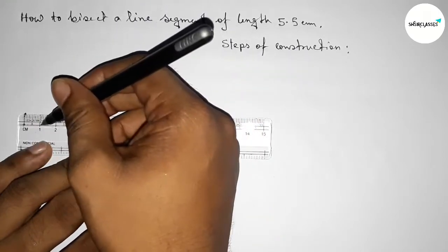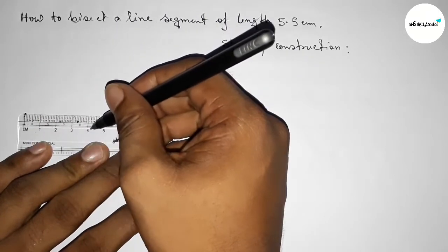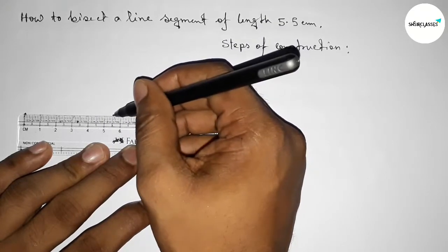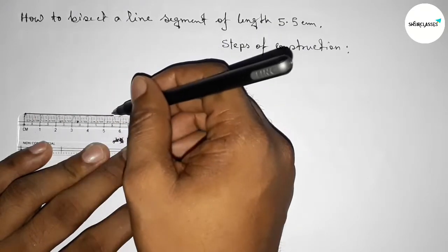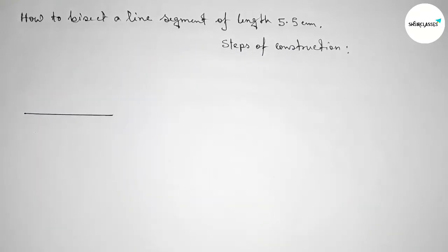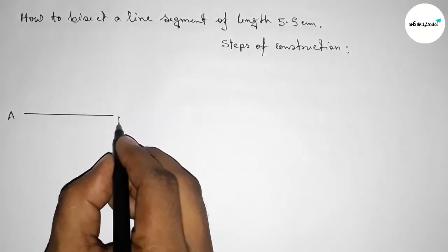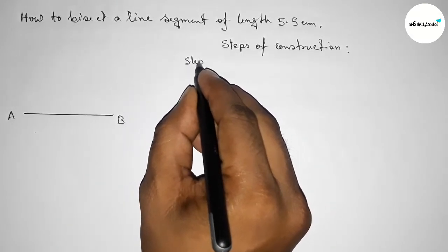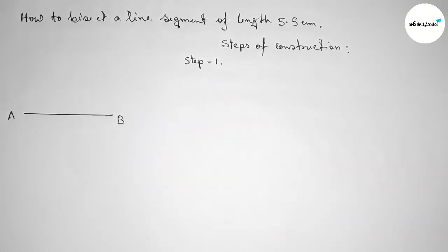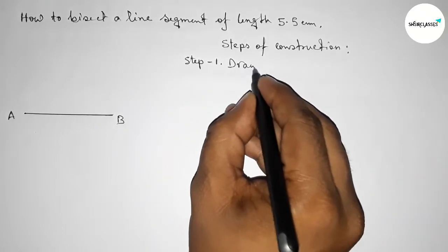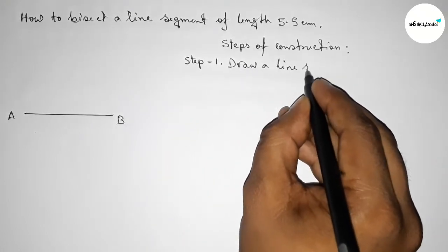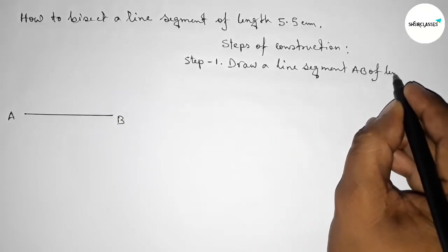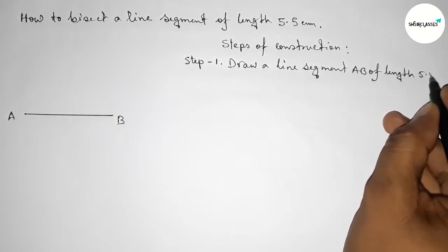Starting from zero: one, two, three, four, five — and this is the 5.5 centimeter line. Taking point A here and point B here, so AB equals 5.5 centimeters. Step number one: draw a line segment AB of length 5.5 centimeters using a scale.